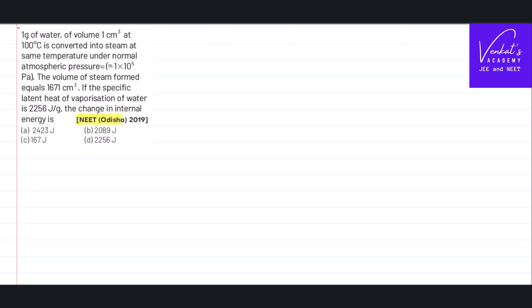The NEET 2019 question from thermodynamics. The problem is like this: 1 gram of water of volume 1 cm³ at 100°C is converted into steam at same temperature under atmospheric pressure.